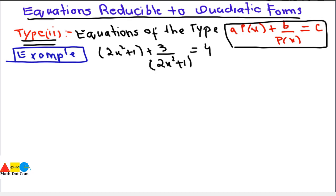We will use a substitution method in order to solve this type of equation. As it is clear that these terms are the same, they can be replaced by a single variable so that we can have a simpler equation and reduce it to the quadratic form. So let 2x² + 1 = y.